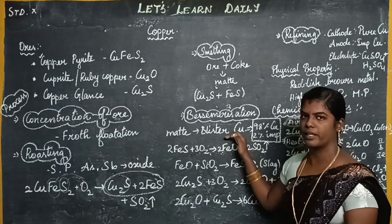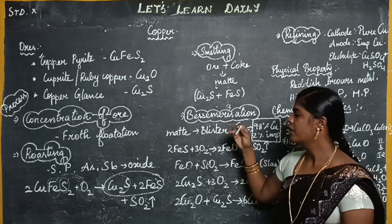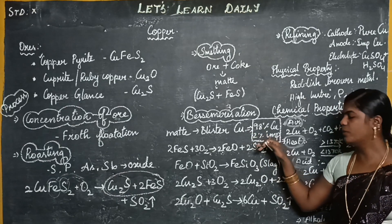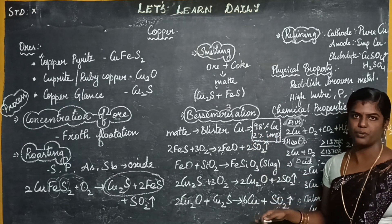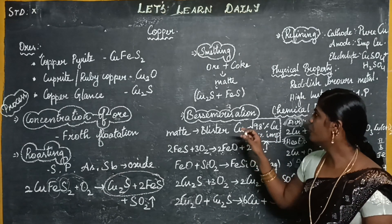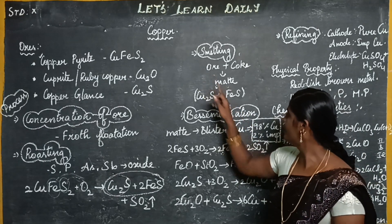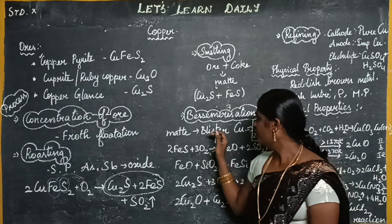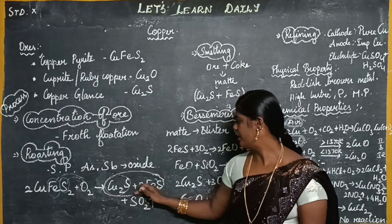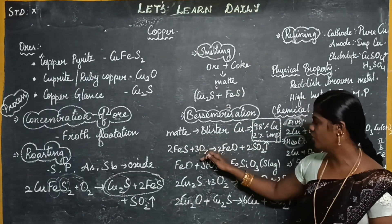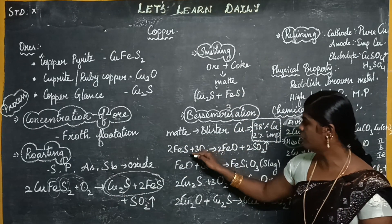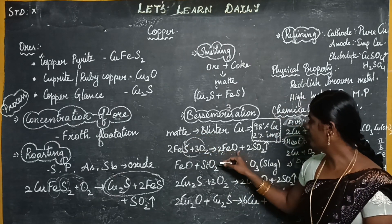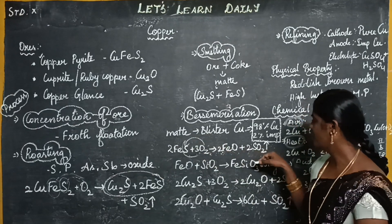It's called blister copper. Blister copper is 98% copper and 2% impurity. So if you have 2 marks, it is called blister copper. We need to treat oxygen here. Then we react with FeS in the reaction. Then we remove the oxygen. FeO plus SO2.